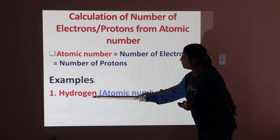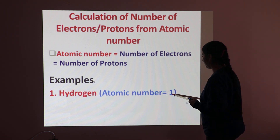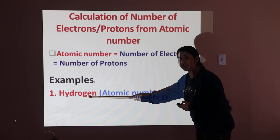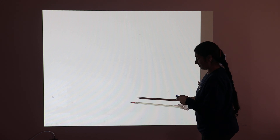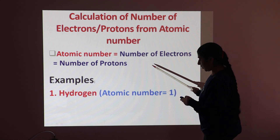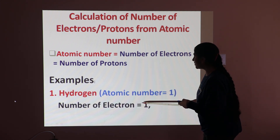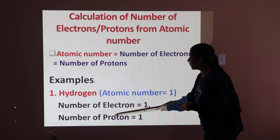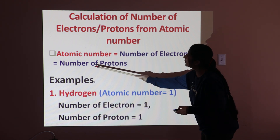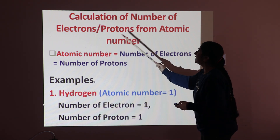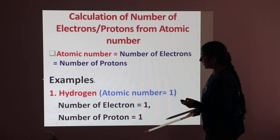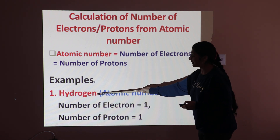The first example is hydrogen, whose atomic number is 1. To calculate the number of electrons and protons in a hydrogen atom: since atomic number is 1, the number of electrons is equal to 1 and the number of protons is also 1, because atomic number equals the number of electrons equals the number of protons.